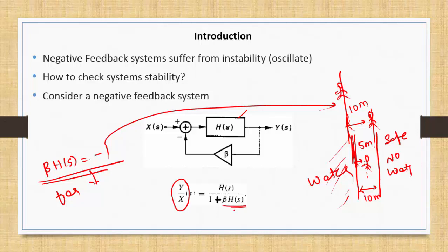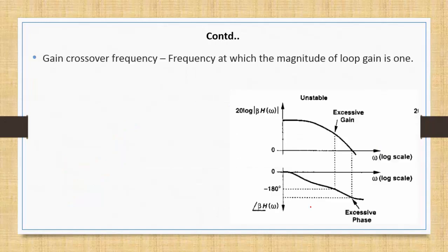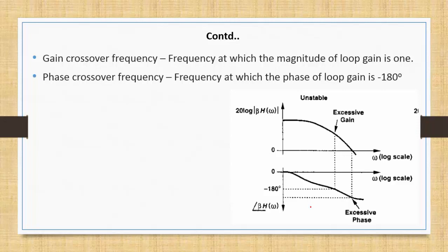We are analyzing the stability of the closed-loop system using the open-loop transfer function β·H(s). Using this open-loop transfer function, we comment on closed-loop stability. We define two new terms: gain crossover frequency — the frequency at which the magnitude of loop gain is 1 — and phase crossover frequency — the frequency at which the phase of loop gain is -180 degrees.